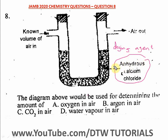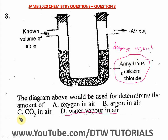Drying agents draw water molecules or moisture from their environment. So the answer is water vapor, because anhydrous calcium chloride is present and it's used to dry water vapor, condensation, and moisture from the environment. So this diagram is used to determine the amount of water vapor in the air. The answer is option D.